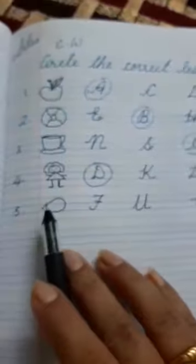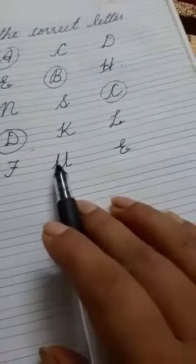Number 5, egg. F for egg, U for egg, E for egg. Which letter will you circle? Letter E.